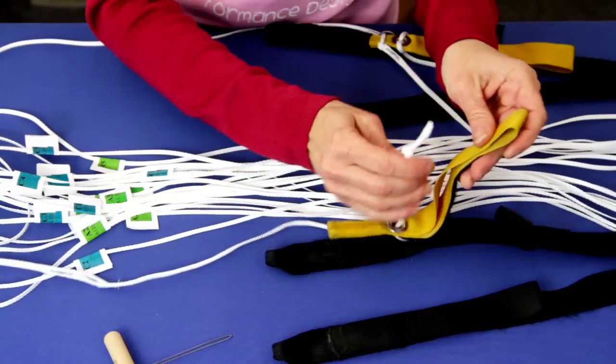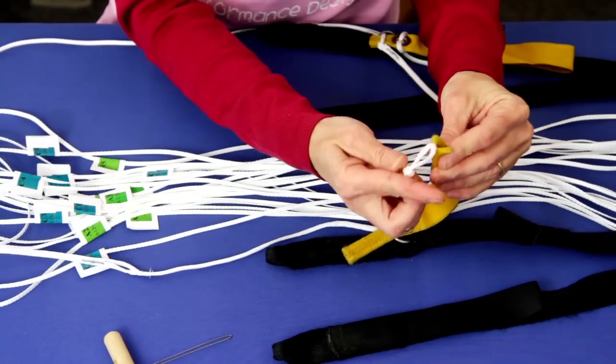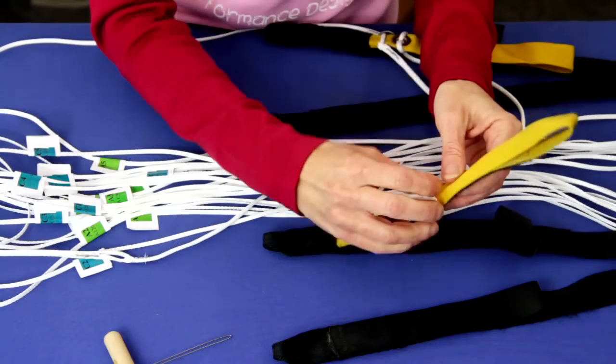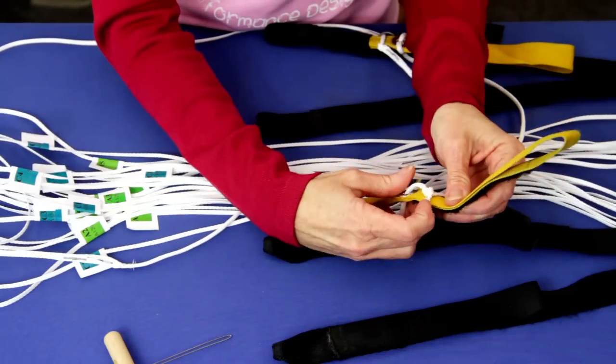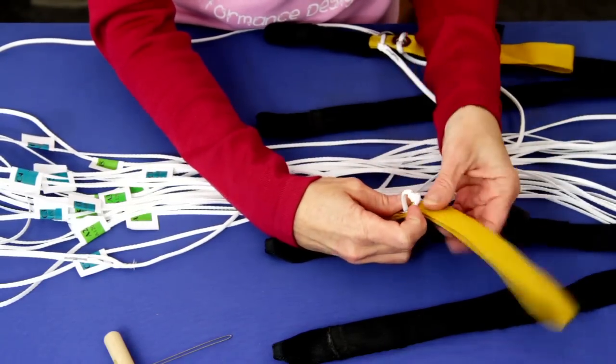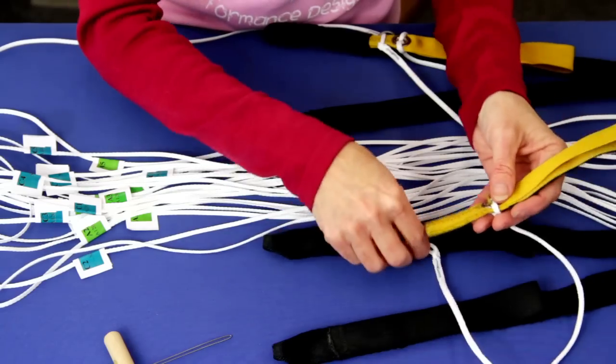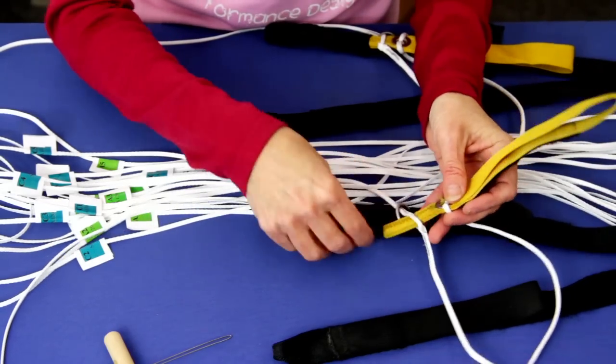You may have to fold the end of the toggle in half to pass it through the loop. Once this is done, you can now set the brake.